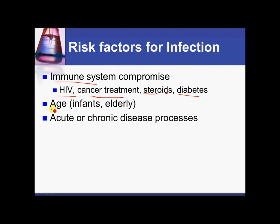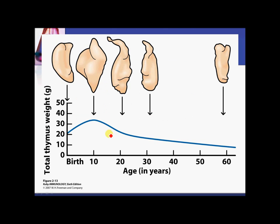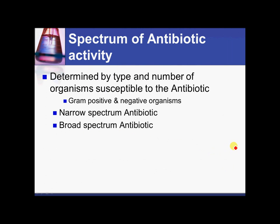Age is also a factor — infants and the elderly are at higher risk for infection, as shown on the next slide with the bell curve of immune function. Regarding gram-positive and gram-negative bacteria, which we'll look at with narrow and broad spectrum antibiotics, it's important to know that gram-positive bacteria have one cell wall, and gram-negative bacteria have two cell walls.